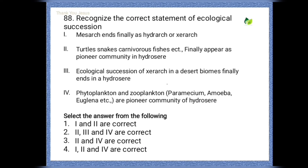Next question: recognize the correct statement of ecological succession. Statements: mesarch ends finally as hydrarch and xerarch; turtles, snakes, carnivorous fishes etc. finally appear as pioneer community in hydrosere; ecological succession of xerarch in a desert biome finally ends in a hydrosere; phytoplankton and zooplankton examples — Paramecium, Amoeba, Euglena — are pioneer community of hydrosere. The correct option is the third one — second and fourth sentences are correct.